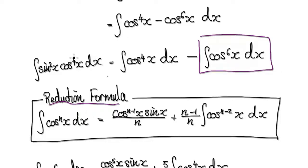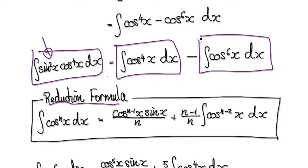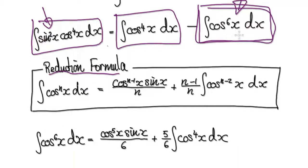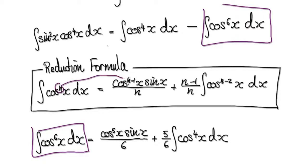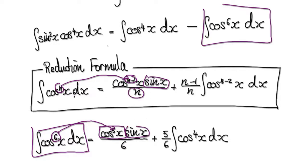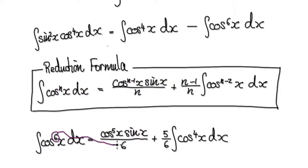So currently what we're trying to find out is this block here, which equals this take away this. Now let's use the reduction formula on this. Applying the reduction formula, this decreases by 1, so now you've got cos to the power of 5, because this decreases by 1. And then n remains the same, so this n here remains the same, and then you've got n minus 1, which will be 5, and n is 6.